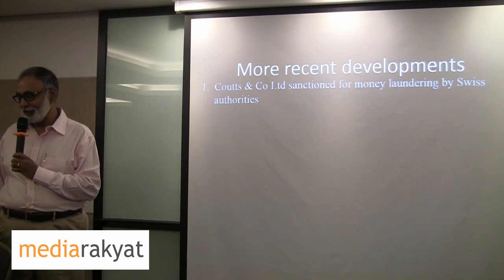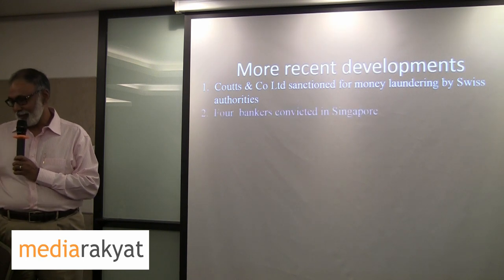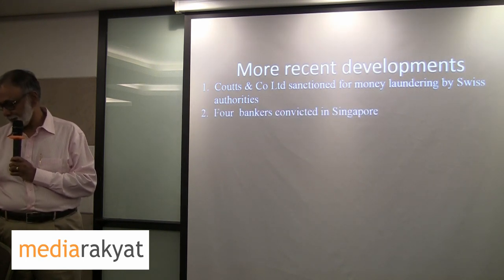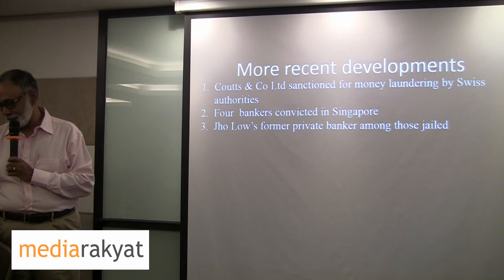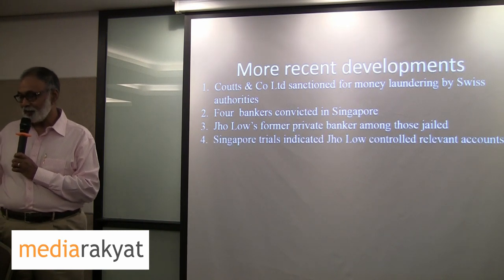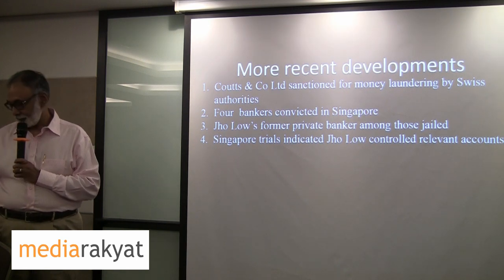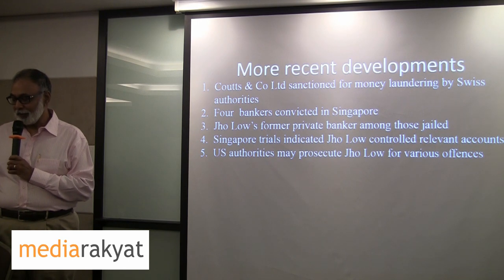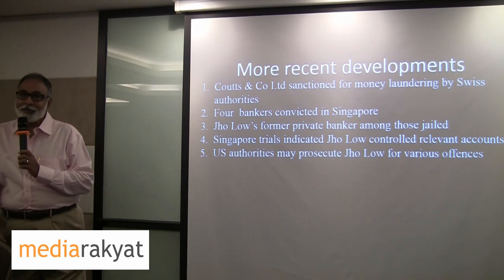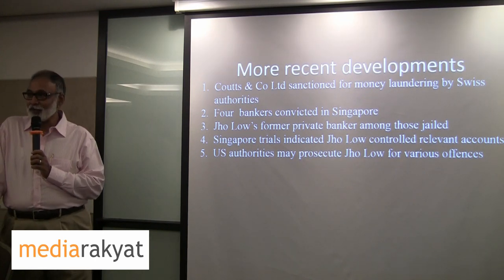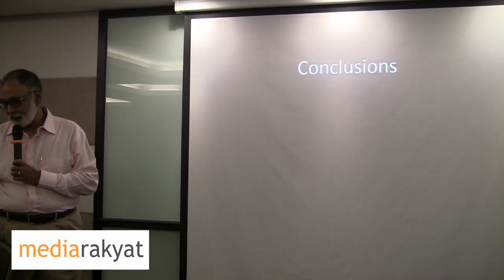More recent developments: Coutts & Co Limited was sanctioned for money laundering by Swiss authorities, all in connection with 1MDB. Four bankers were committed in Singapore. JOLO's former private banker was among those who was jailed. Singapore trials indicated that JOLO controlled the relevant accounts — almost all of the accounts involved were controlled by JOLO. US authorities may prosecute JOLO for various offences, as reported by the Wall Street Journal. The question being: why aren't we doing something about JOLO?